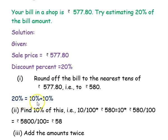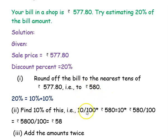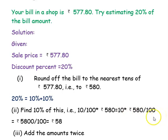First, find the discount amount for 10 percent. 10 percent of rupees 580 is written as 10 into 1 by 100 into rupees 580, which simplifies to 10 into rupees 580 divided by 100.